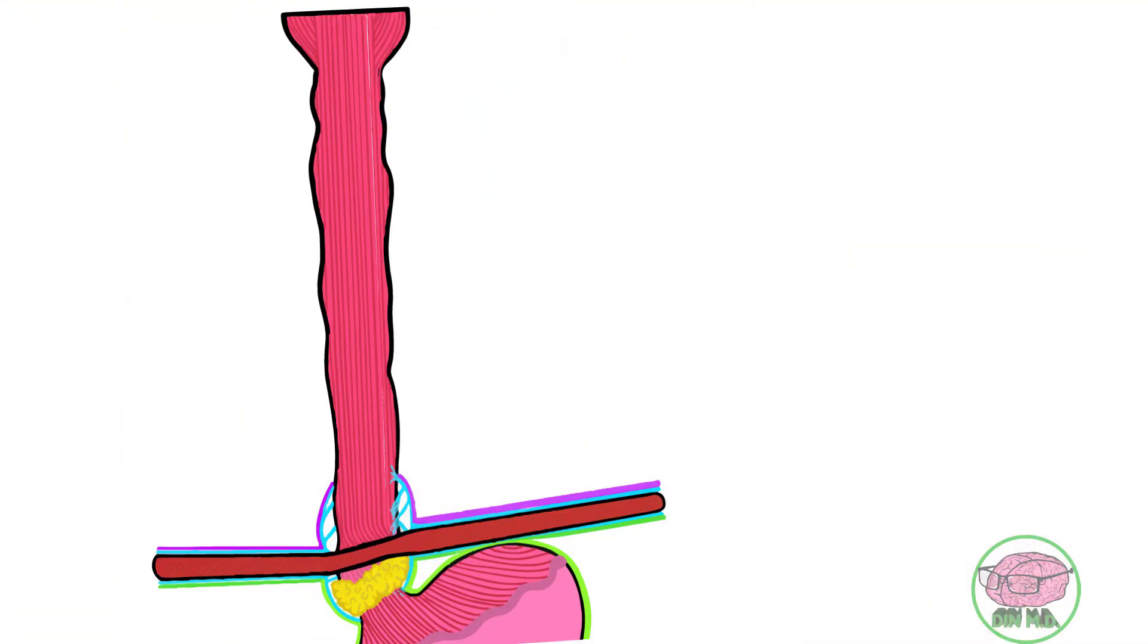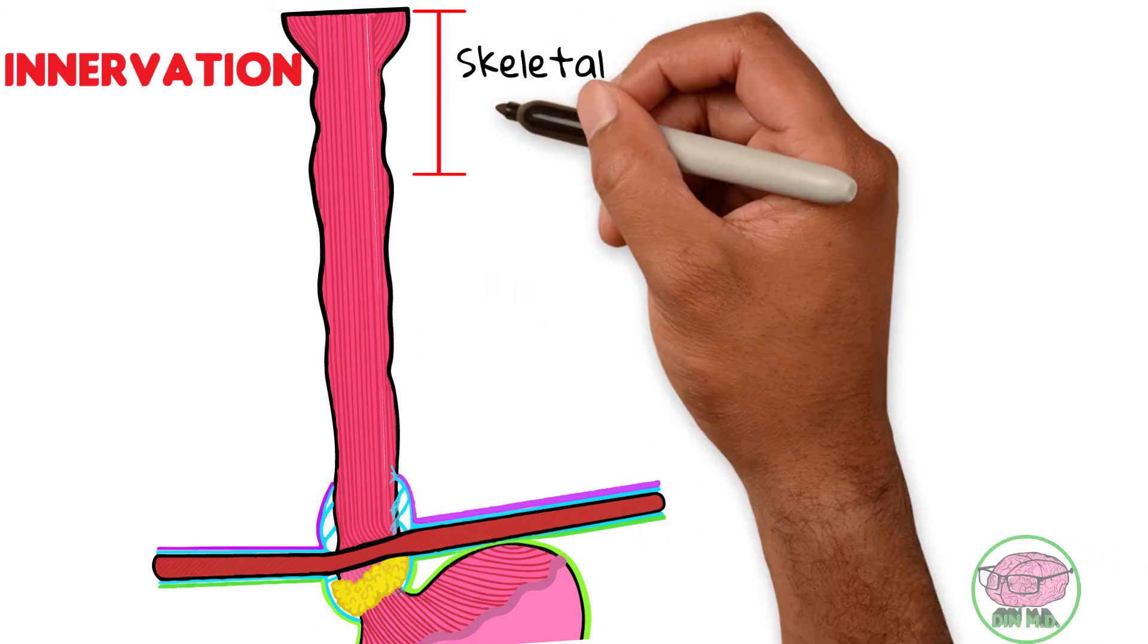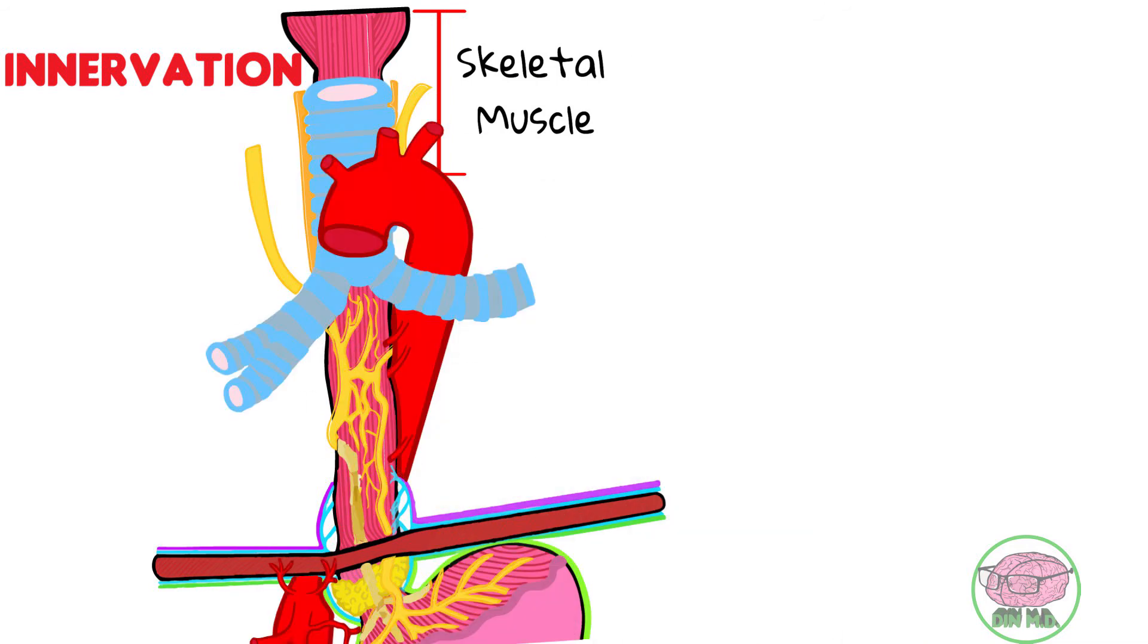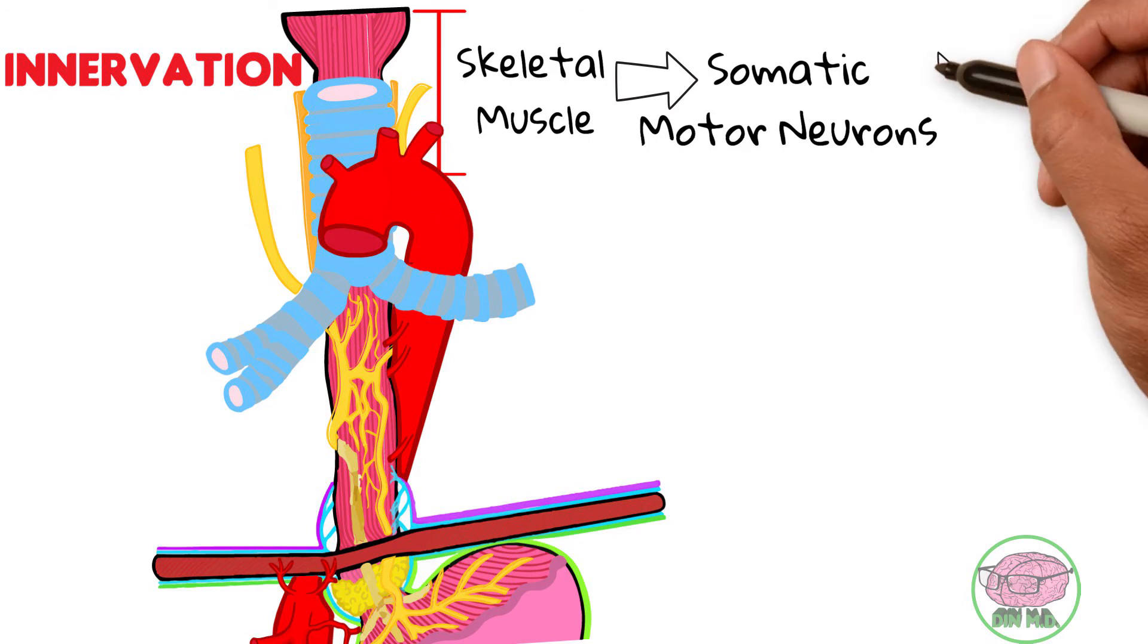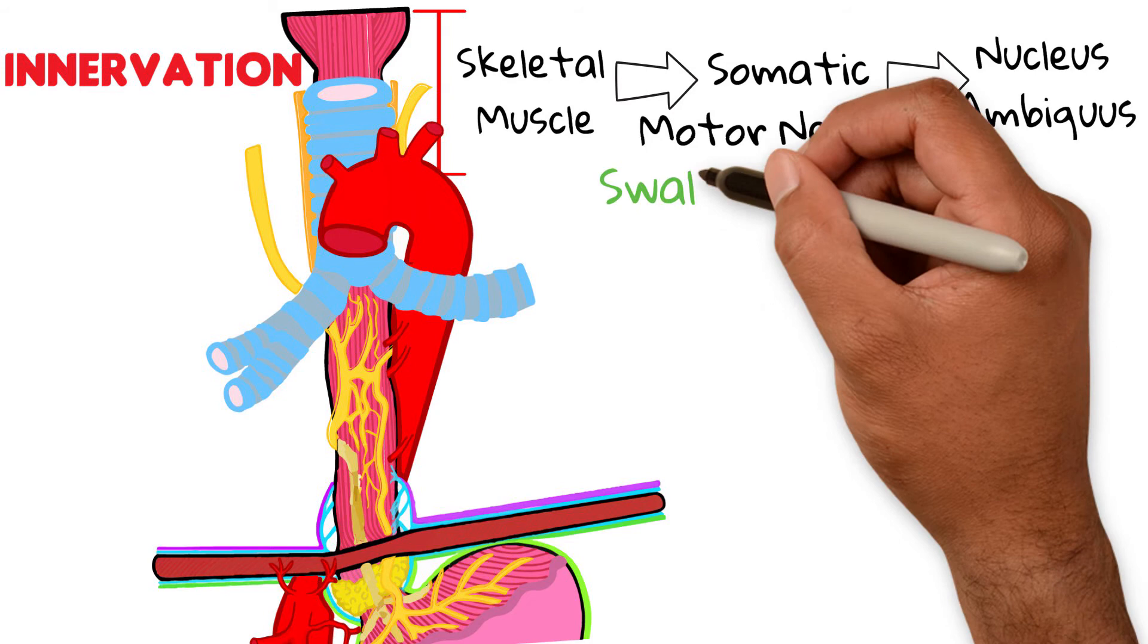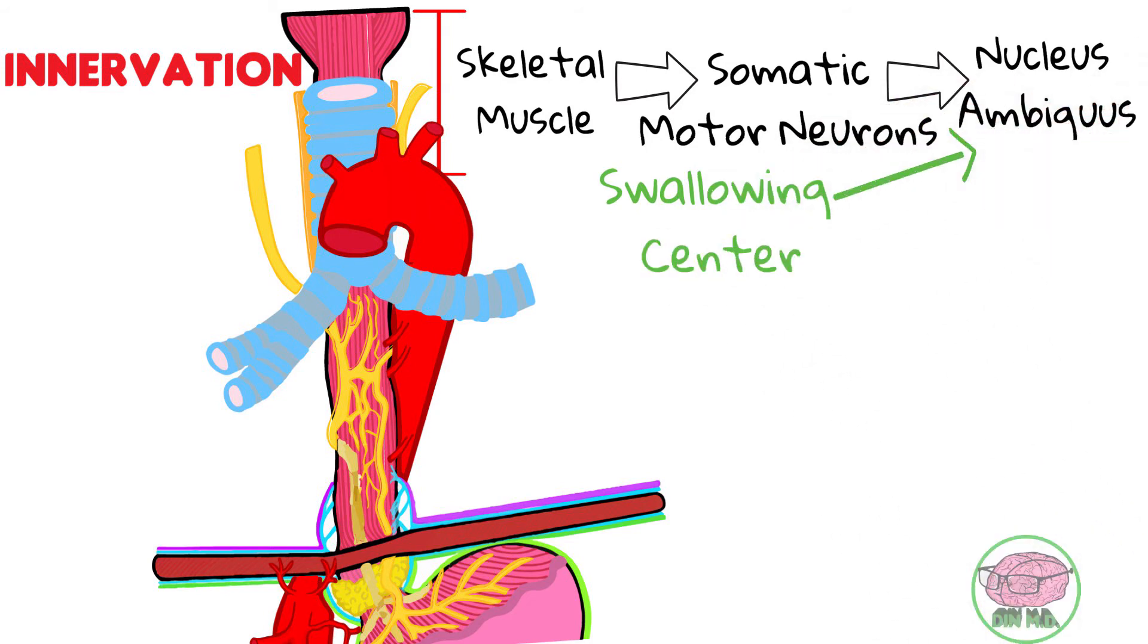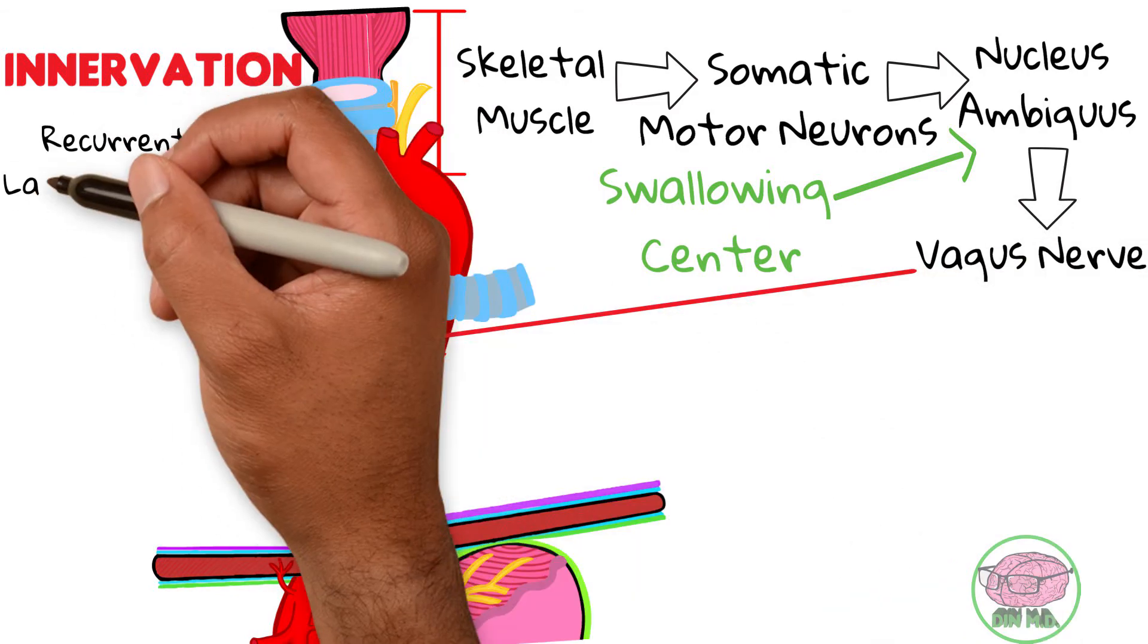In order for the esophagus to do its job, it needs to receive orders from the nerves. The superior one-third of the esophagus is made up of skeletal voluntary muscle, mainly by the cricopharyngeus muscle. Therefore, it's innervated by somatic motor neurons. In this case, they originate from the nucleus ambiguus, also known as the swallowing center, located in the brainstem. And they arrive to the cervical esophagus transported by the recurrent laryngeal nerve.